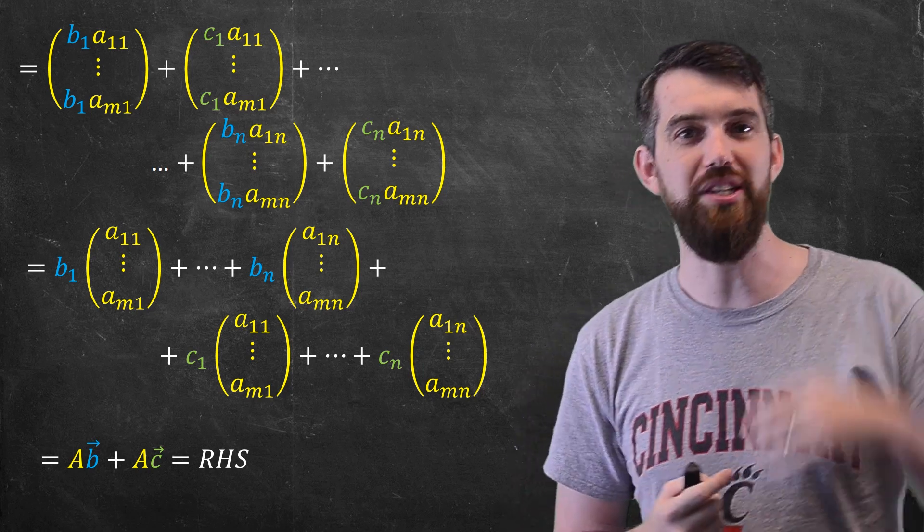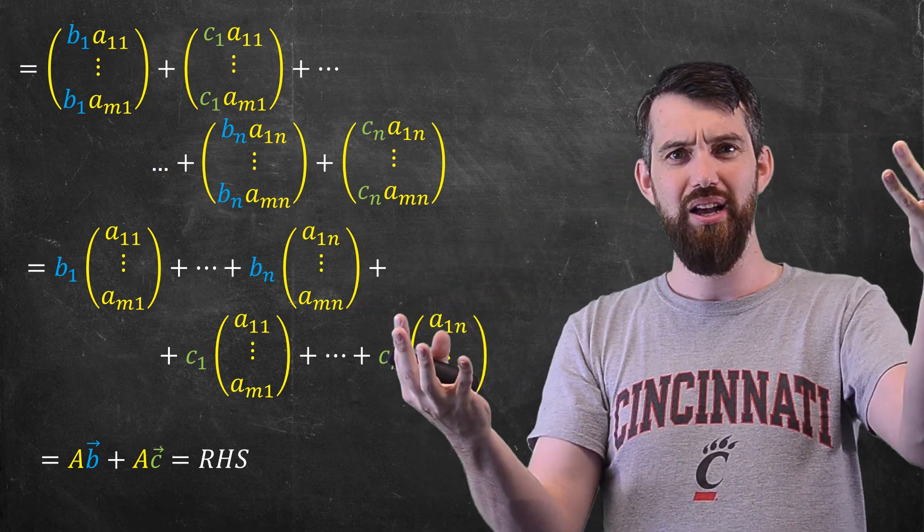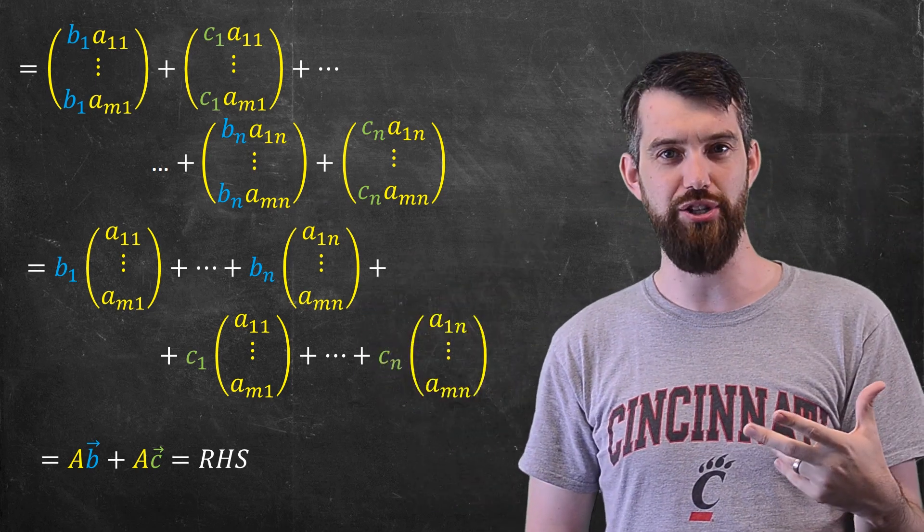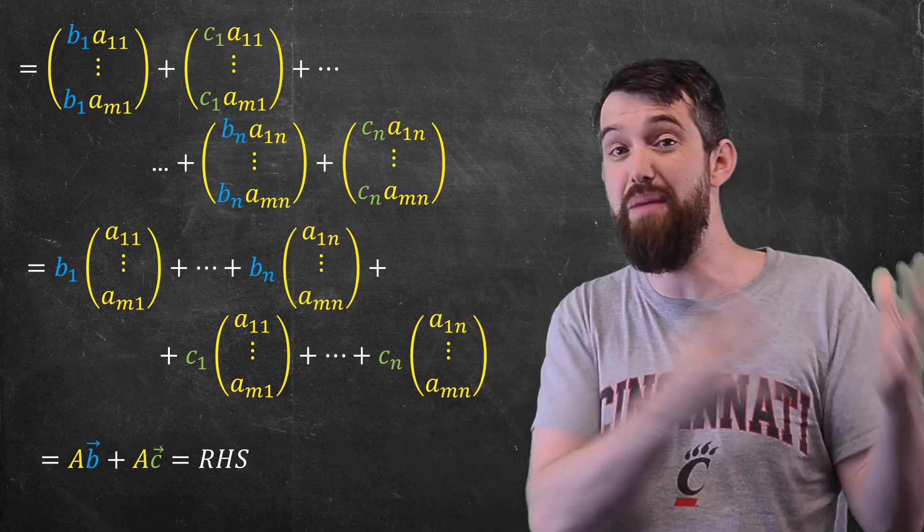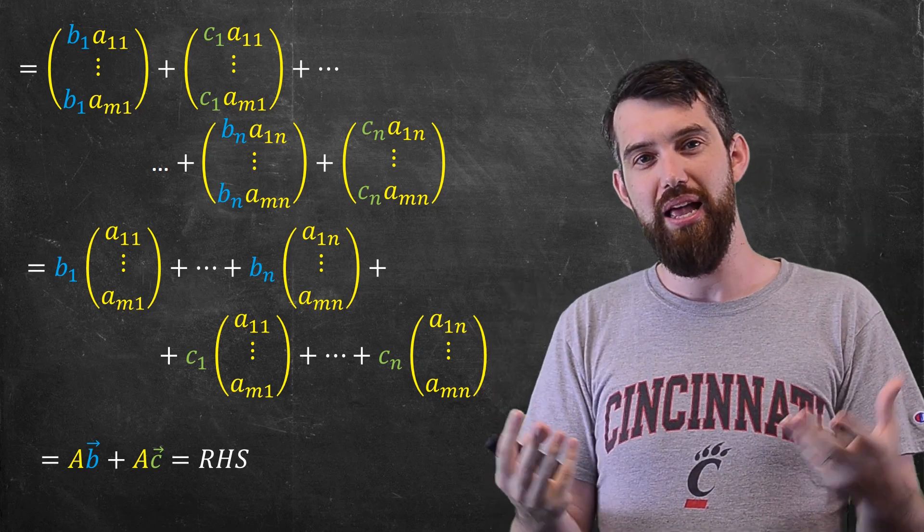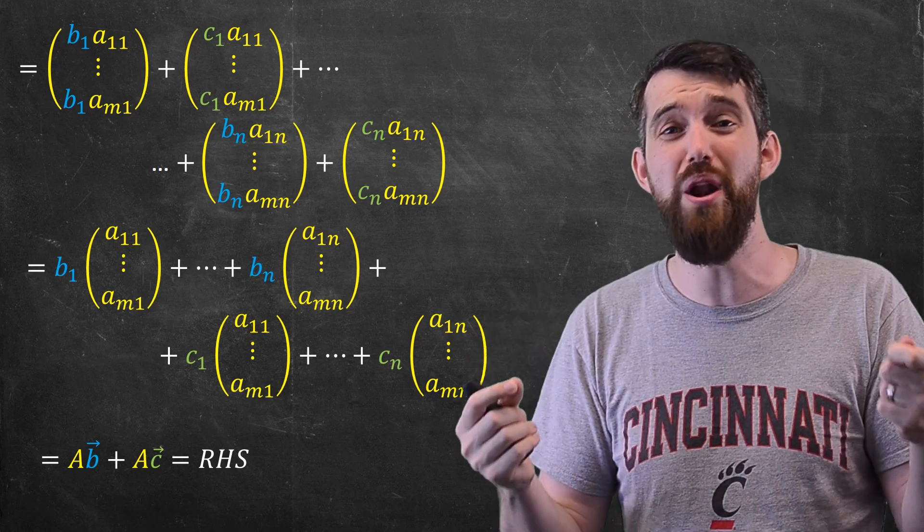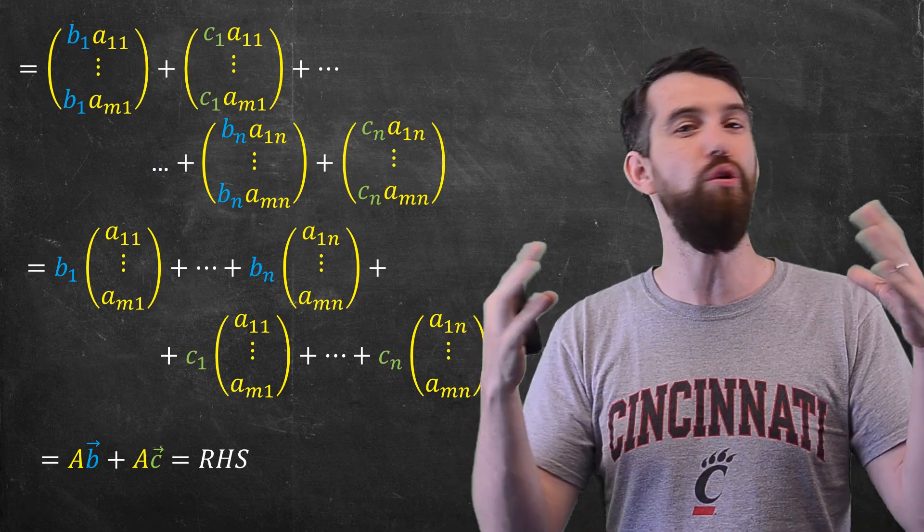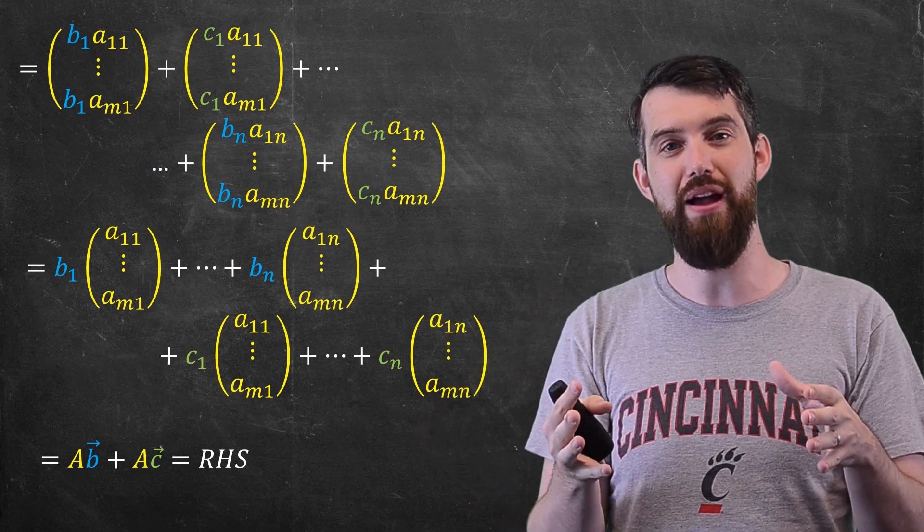So what did we do? We started with the A times B plus C, we ended up with the AB plus AC. We used entirely general notation, we applied our definitions effectively, our definitions of a matrix vector product, our definition of the sum of two different vectors, and we manipulated it until the distributivity property that we really wanted was in a sense inherited from the normal old distributivity property, just of numbers, all the way done on the inside of a vector.